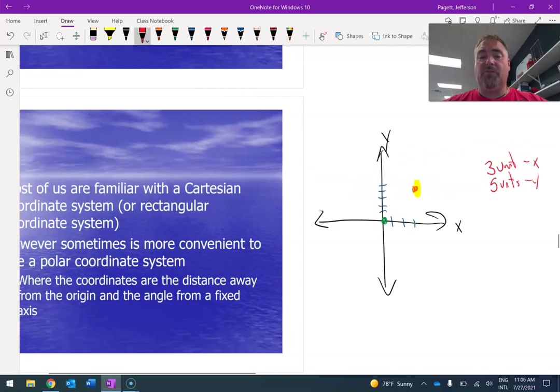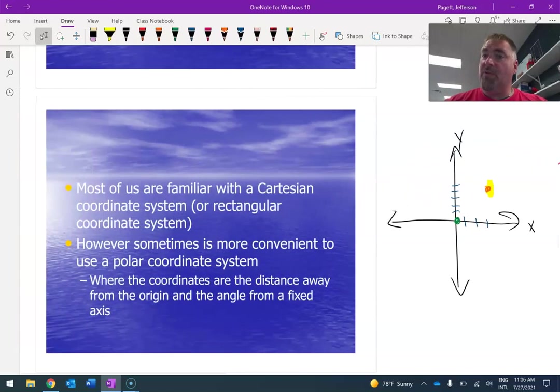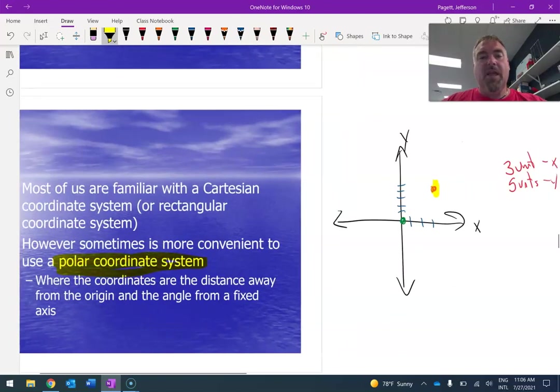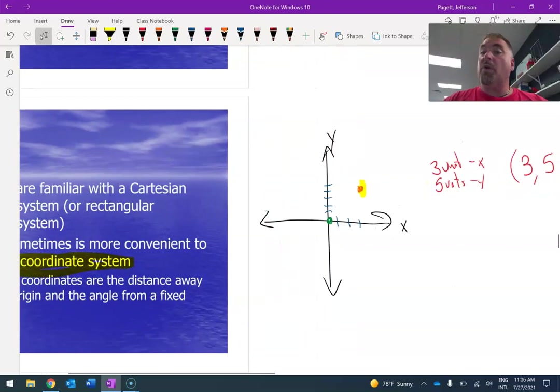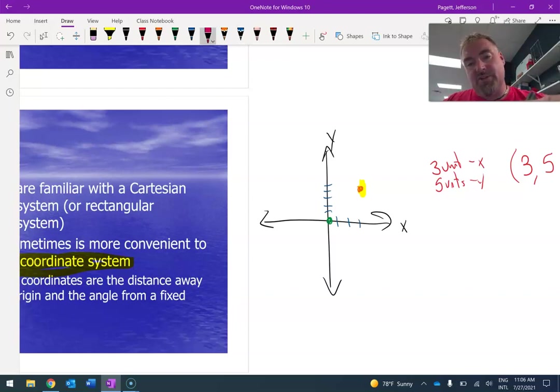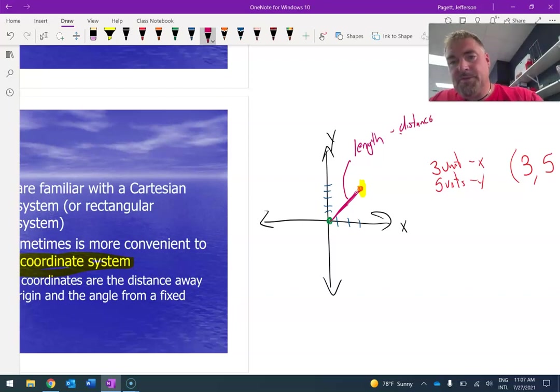Now, another way that we have done this before, it's getting a new name, but you've seen it before, is what's called the polar coordinate system. And basically now, instead of them giving it kind of like, we're going to go so far along the X and then so far along the Y, what you'll get instead is you'll get a line. And this thing right here, this length of the line, tells you the distance away from the origin.